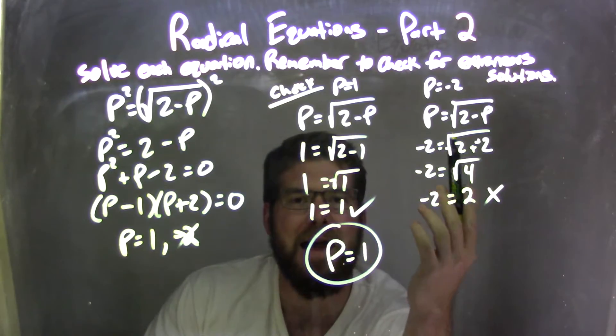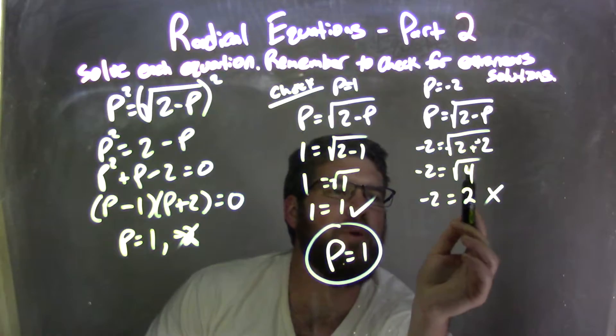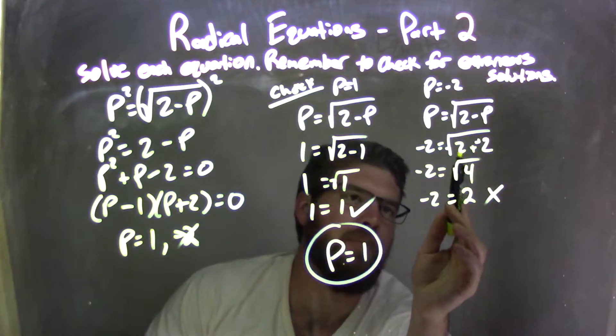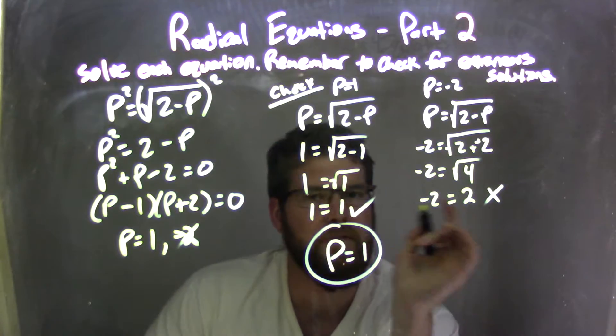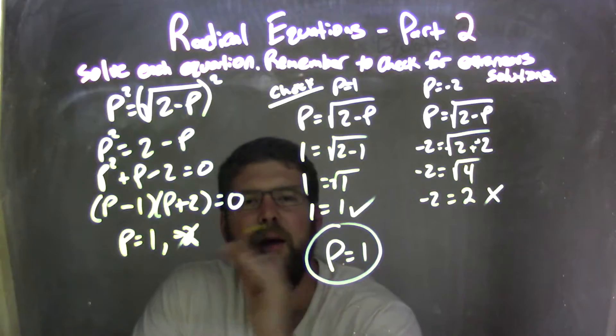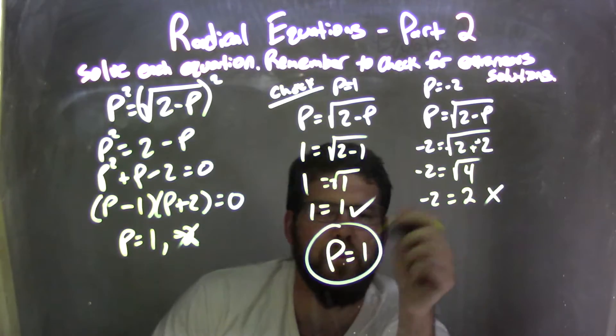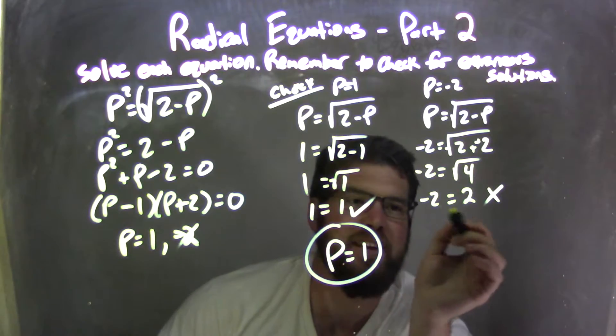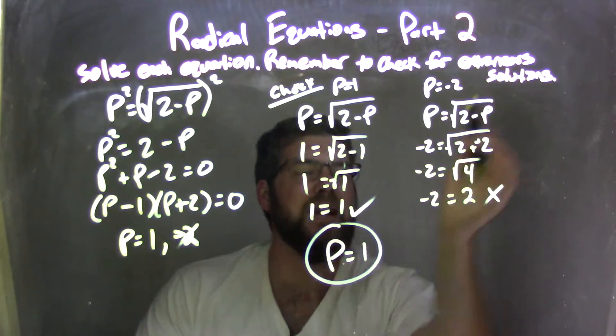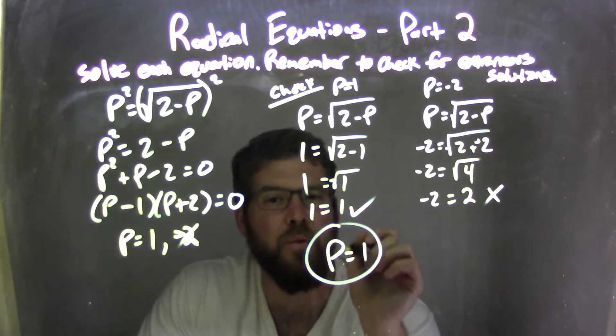Let's check the other one. So we plugged negative 2 back into the equation for both p's. By doing so, we have the square root of 4, right? So 2 minus the negative 2 is square root of 4. Square root of 4 is positive 2. And we have negative 2 equals positive 2. That is not a true statement. Be careful. A lot of times I'll see students just kind of erase the negative and be like, yeah, same, good to go. No. They are different numbers. So that is an extraneous solution, right? That's an extraneous solution right there. And so my only real solution is p equals 1.